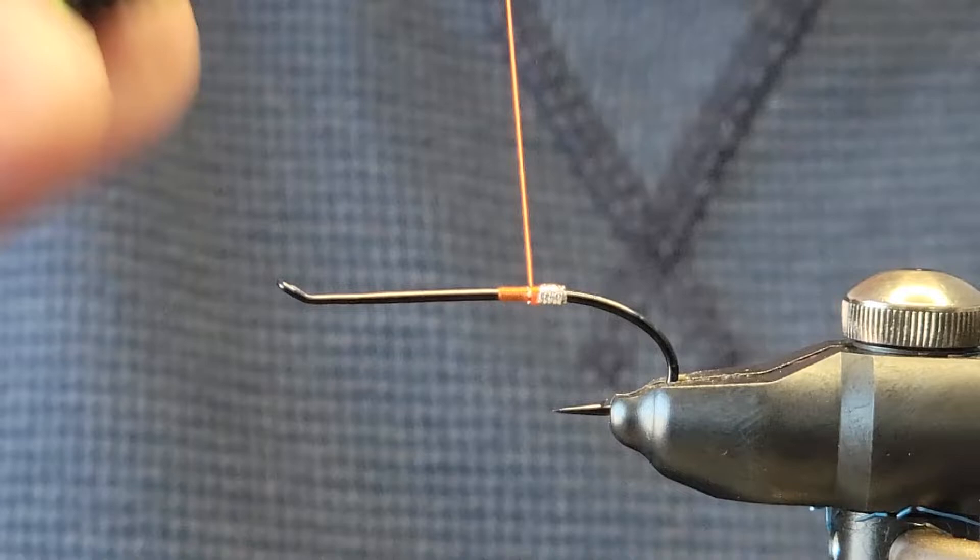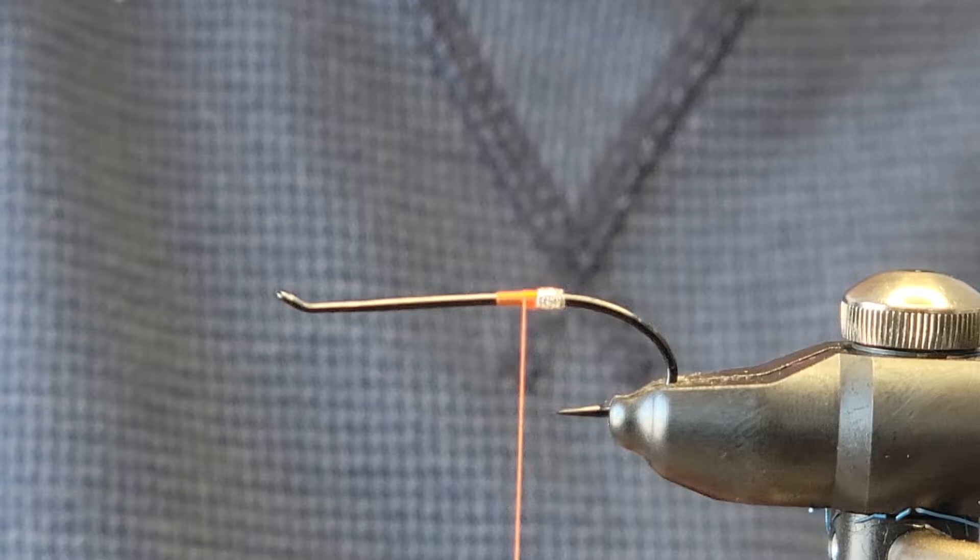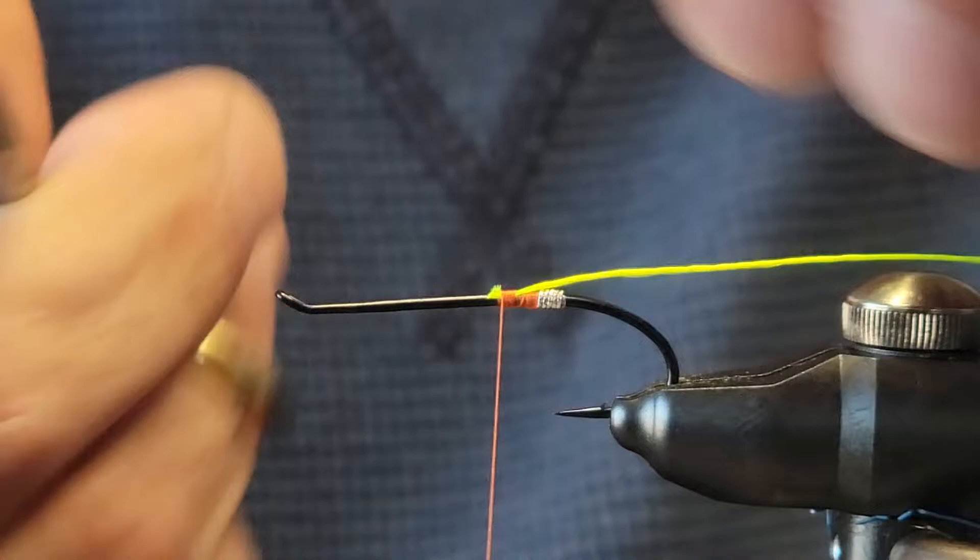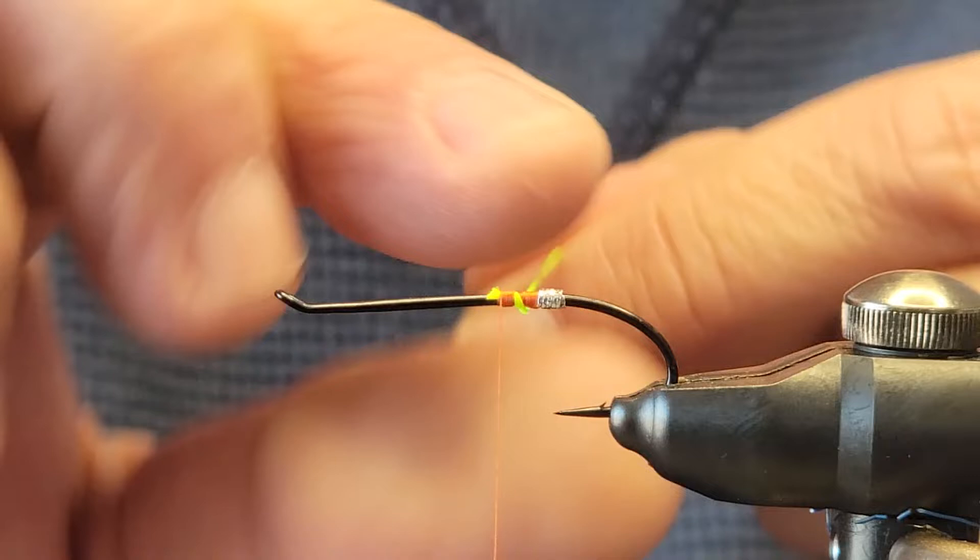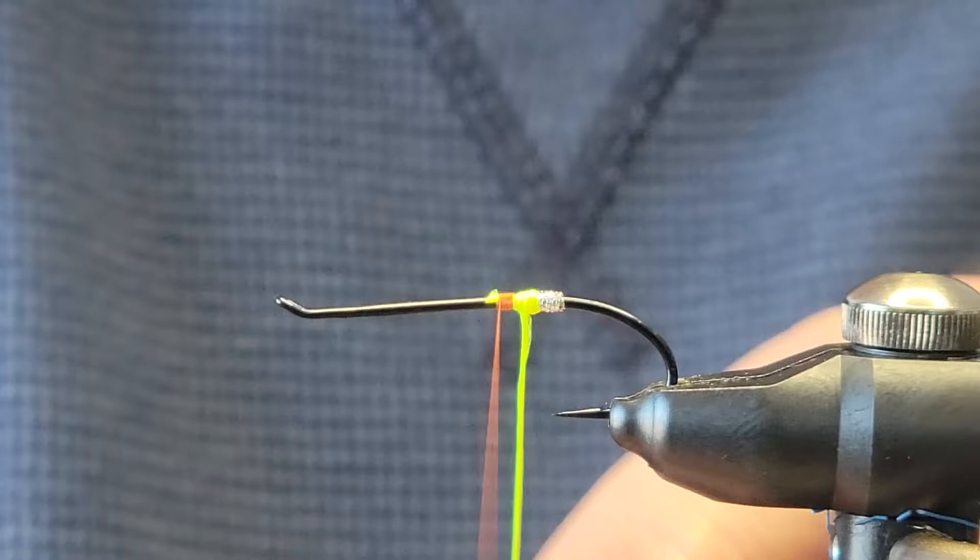Now we're going to tie in some Unifloss Chartreuse 2-ply. We're going to wrap that over itself, and we'll just tie that off there to see how it looks. Looks good.